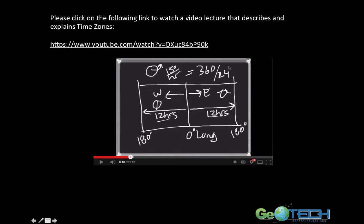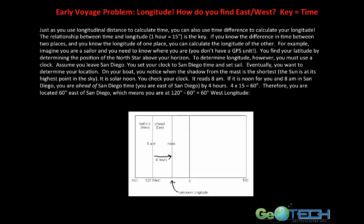Welcome back. At this point you should have a good understanding of latitude and longitude, how one determines latitude with the use of the North Celestial Pole star, and how one determines longitude with the use of a good clock. In geography, there's something we'd like to look at called the early voyage problem, and this early voyage problem had everything to do with longitude.